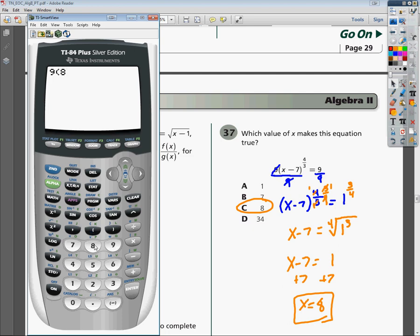So 9 times 8 minus 7, because that's the x value that we want to plug in, 8 minus 7 raised to the 4/3 power.